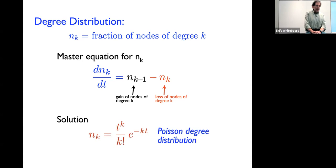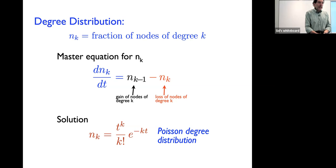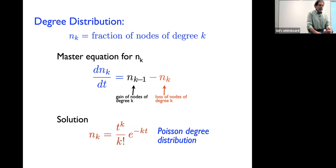Even though we're putting in links randomly, the degrees of the nodes are actually very narrowly distributed because there is an exponential tail. This Poisson degree distribution looks like a very sharp distribution. In the long-time limit it goes over to a Gaussian with mean t and width proportional to √t. This is what's called a narrow degree distribution — one of the main results of the Erdős-Rényi random graph.